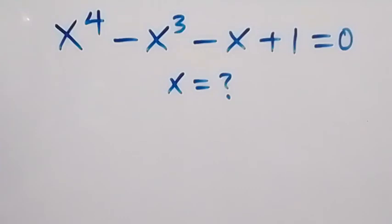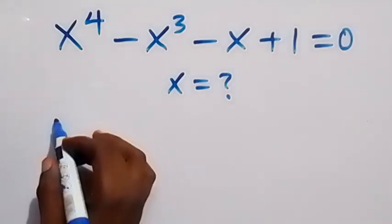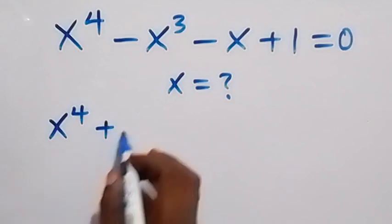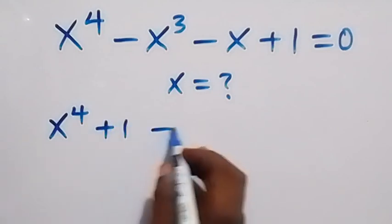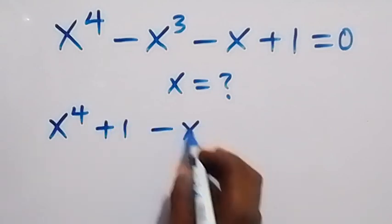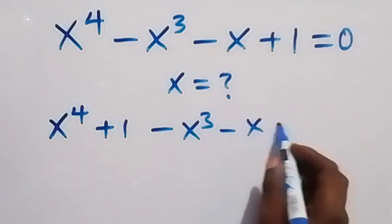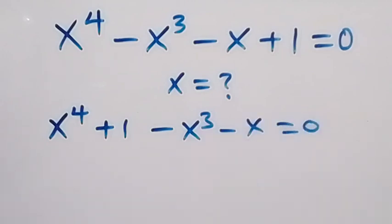Hello, you are welcome. How to solve this nice algebra equation. We have x raised to power 4 plus 1, then minus x raised to power 3 minus x equals to 0.